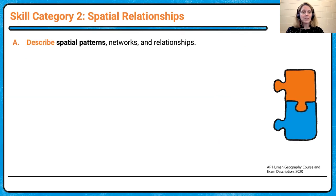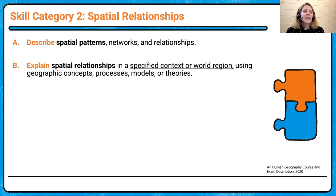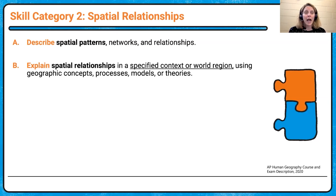The first skill is to describe those spatial patterns, networks, and relationships — the characteristics you see on a map or in those areas. What is it like there? We're also going to explain spatial relationships in a specified context or world region. When we talk about 'explain,' this is the how and the why — processes, models, theories — we're going to dive deeper into those examples.